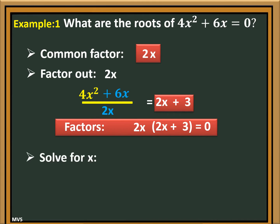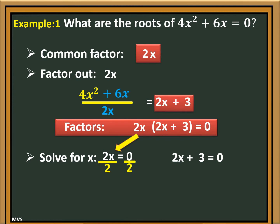Let us solve for x by equating the two factors to zero. So we have 2x is equal to zero, and 2x plus 3 is equal to zero. Solving 2x equals zero first: dividing both sides by 2, we get x is equal to zero over 2. Therefore, x is equal to zero.